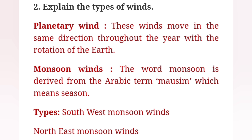Question 2: Explain the types of winds. First — Planetary winds: These winds move in the same direction throughout the year with the rotation of the earth. Second — Monsoon winds: The word monsoon is derived from the Arabic term 'Mousim,' which means season.